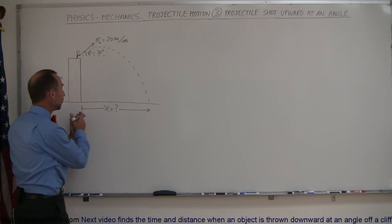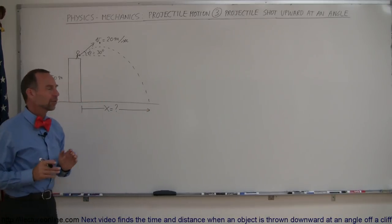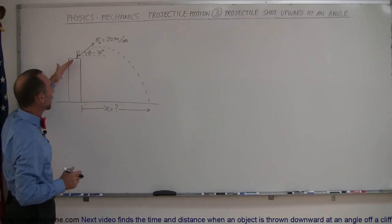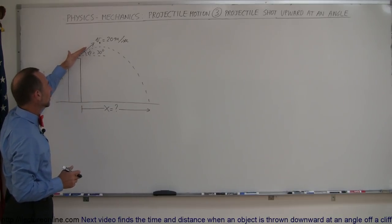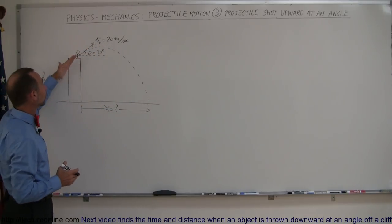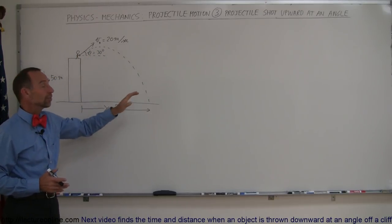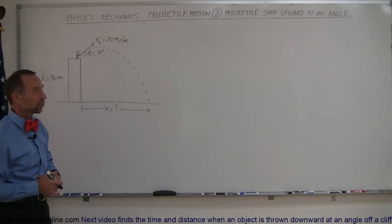The question still remains how far will the projectile go in the x direction before it hits the ground. Now since the projectile is thrown upward at an angle you would expect that it stays in the air longer. It will go farther in the air. On the other hand, the x component of this is now smaller and so each second it will travel a smaller distance in the x direction so that will have a factor as well.